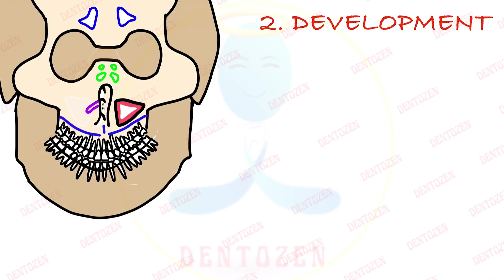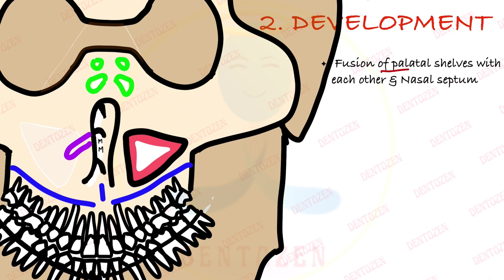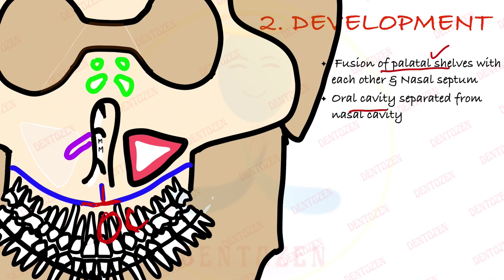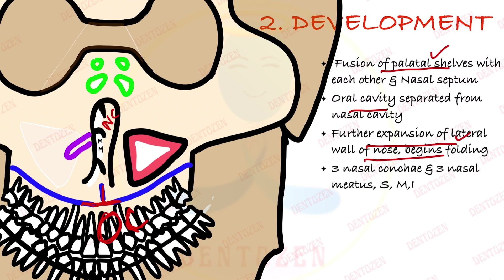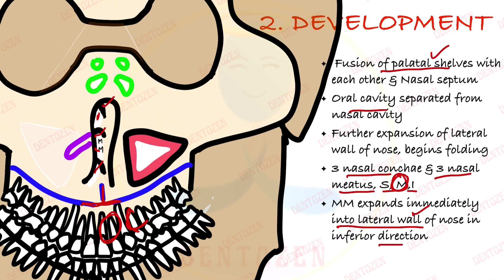Now let's see its development. It starts when the horizontal palatine shelves fuse with each other and with the nasal septum. With that fusion, the oral cavity gets separated from the nasal cavity. The nasal cavity then further expands — the lateral wall of the nose begins folding, forming the three conchae: superior, middle, and inferior, with the nasal meatus below them. The middle meatus then expands into the lateral wall of the nose in the inferior direction, and that is when the maxillary sinus starts developing, then growing laterally and inferiorly.